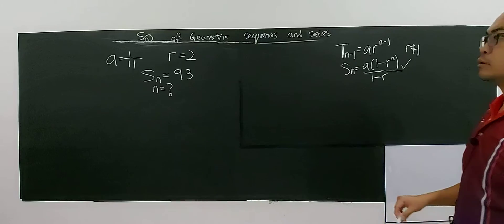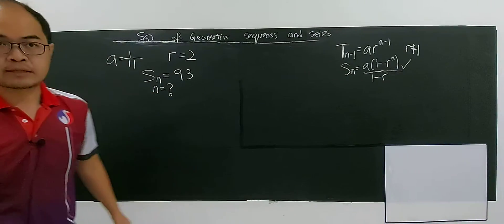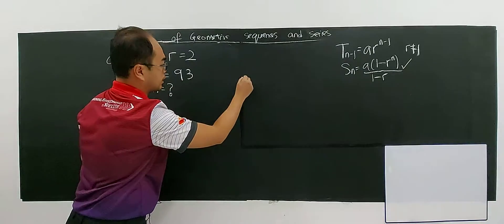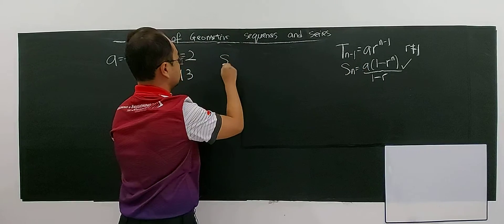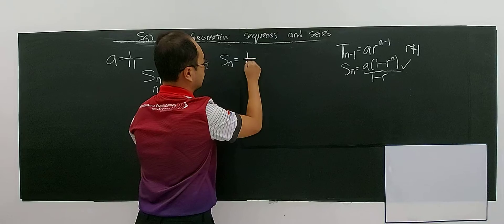So SN is for geometric. You have a, the a is 1 over 11, so you just plug in here. The SN will be 1 over 11 for a.